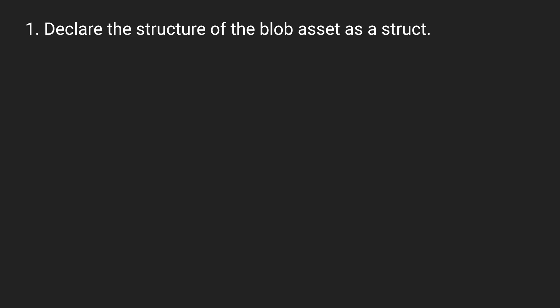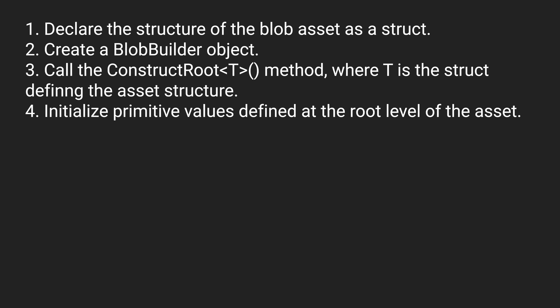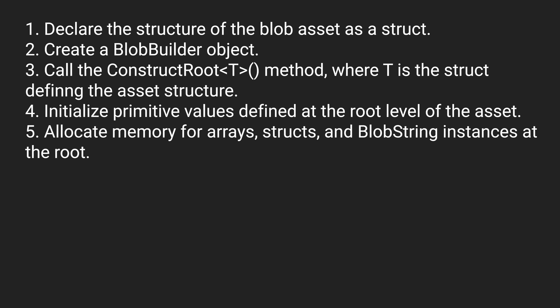There are a number of steps to create blob asset stores. First, declare the structure of the blob asset as a struct. Next, create a blob builder object — from that object we can call the construct root method, passing in the type of the struct we're defining. Then we'll initialize the primitive values defined at the root level. After that, we'll allocate memory for arrays, structs, and blob string instances at the root. Blob assets require us to be very specific about how much memory we're going to be allocating.